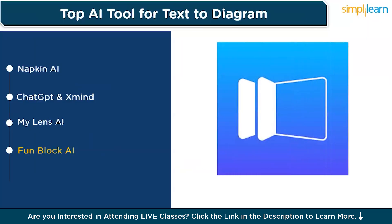Our next tool is Funblock AI. If you're looking for a fun, engaging tool to create visually appealing diagrams, Funblock AI is a perfect choice. Unlike traditional diagramming tools, Funblock AI focuses on adding vibrant, interactive elements to your visuals. It allows you to turn simple text input into playful flowcharts, mind maps, and network diagrams — ideal for educational and marketing purposes. The colorful animated visuals make it stand out with a dynamic, intuitive, and interactive approach to diagramming.